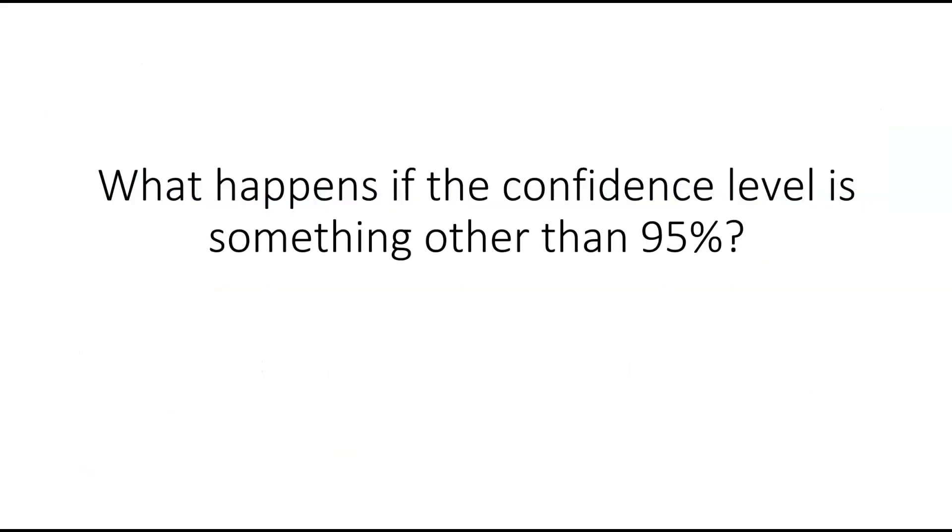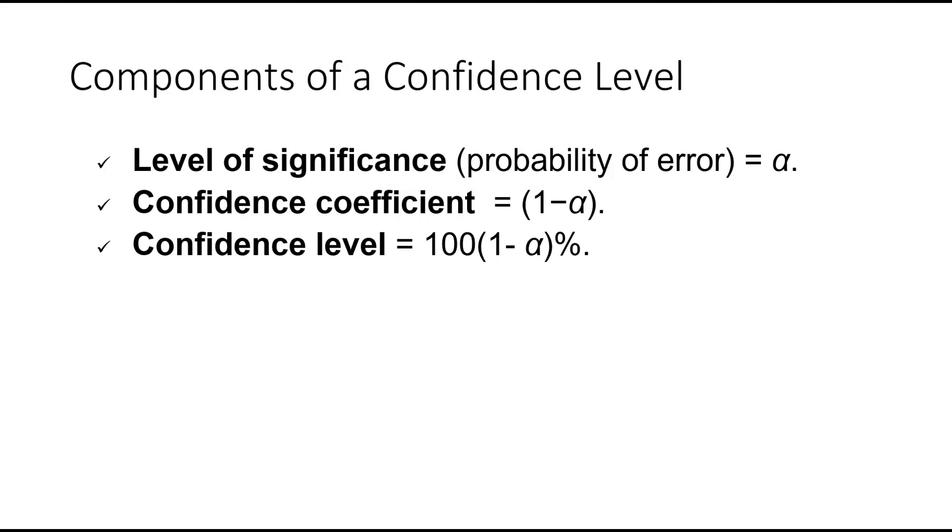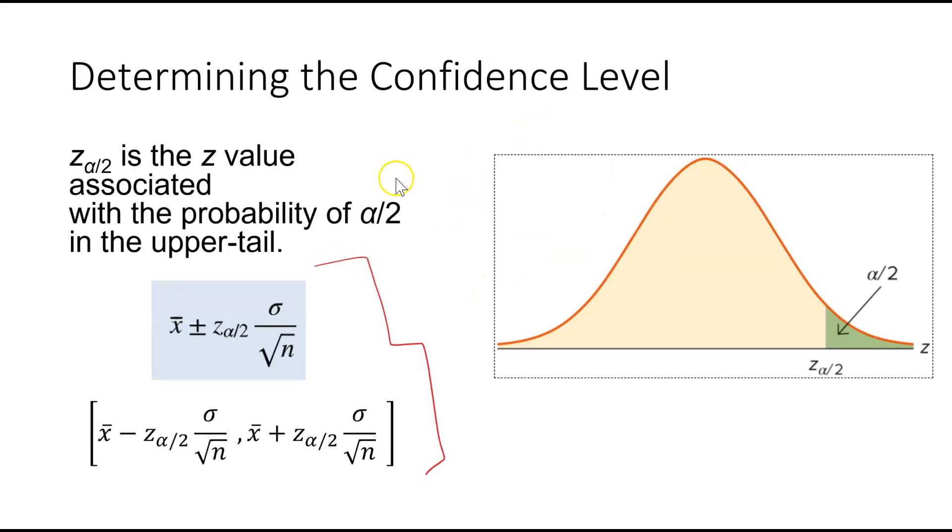So what happens if the confidence level is something other than 95%? When it was 95%, we knew that the Z-score is 1.96. So if we have the level of significance, that is our alpha. Confidence coefficient is 1 minus alpha, and then the confidence level is 1 minus alpha times 100. When we're determining the confidence level, the difference here is just that we are going to be taking that Z-score that we get, that critical value there, and placing that in.